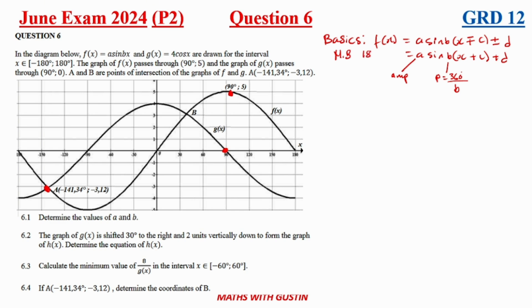For the horizontal shift term c: if it's a plus, the graph is shifted to the right; if it's a minus, the graph is shifted to the left. For the vertical shift d: if d is positive the graph shifts upward, if negative it shifts downward. If you know these basics, you shouldn't struggle with trig functions.